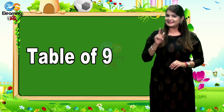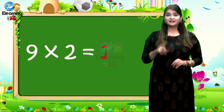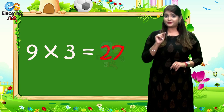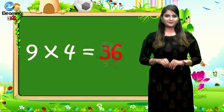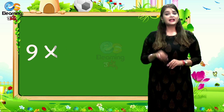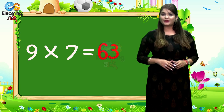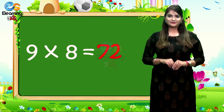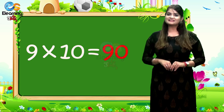Today we will learn the table of 9. 9 1s are 9. 9 2s are 18. 9 3s are 27. 9 4s are 36. 9 5s are 45. 9 6s are 54. 9 7s are 63. 9 8s are 72. 9 9s are 81. 9 10s are 90.